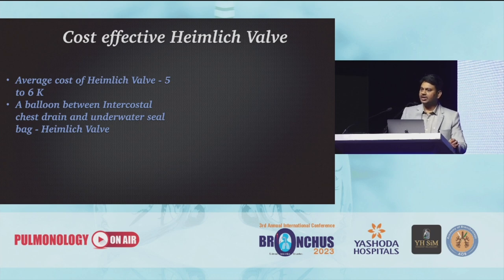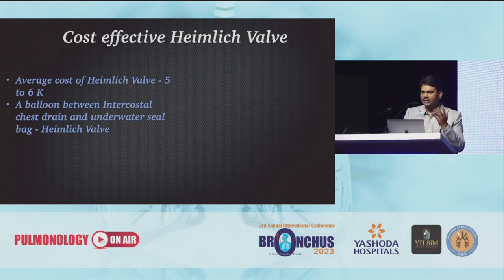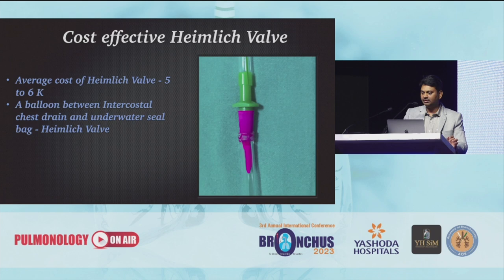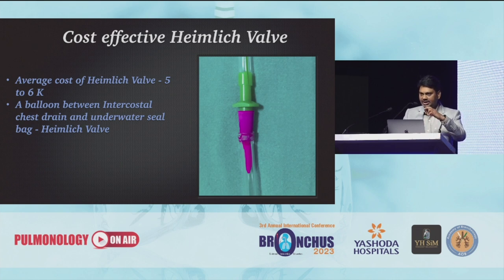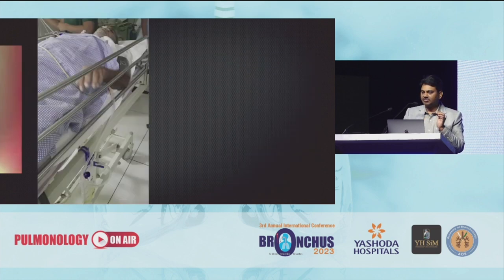Then coming to the cost-effective Heimlich valve. The average cost of a Heimlich valve in our country is around $5,000 to $6,000. This can be replaced by simply placing a balloon between your ICD intercostal tube and bag, which converts your intercostal drain into a Heimlich valve. Just take the balloon, sterilize it with cidex or 2% chlorhexidine, or you can use ETO balloons, and cut the balloon at the proximal end and fix it between the intercostal tube and drain. This balloon acts as a one-way valve and will not allow backflow of fluid from the drainage bag into the pleural cavity, thereby reducing contamination of the pleural cavity.